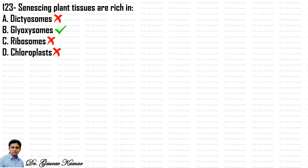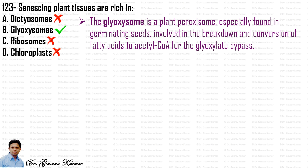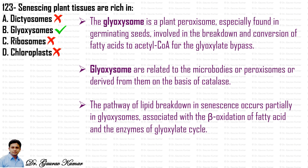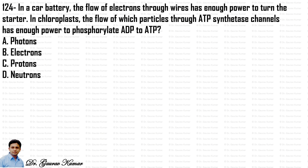Next question: senescent plant tissues are rich in — dictyosomes, glyoxysomes, ribosomes, or chloroplasts? The answer is glyoxysomes. A glyoxysome is a plant peroxisome especially found in germinating seeds, involved in the breakdown and conversion of fatty acids to acetyl-CoA for the glyoxylate bypass. They are related to microbodies or peroxisomes. The pathway of lipid breakdown in senescence occurs partially in glyoxysomes via beta-oxidation of fatty acids and enzymes of the glyoxylate cycle.